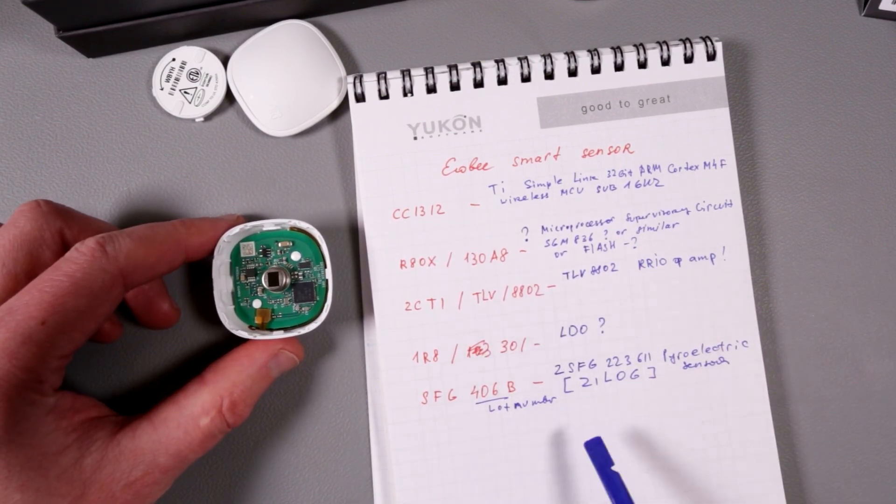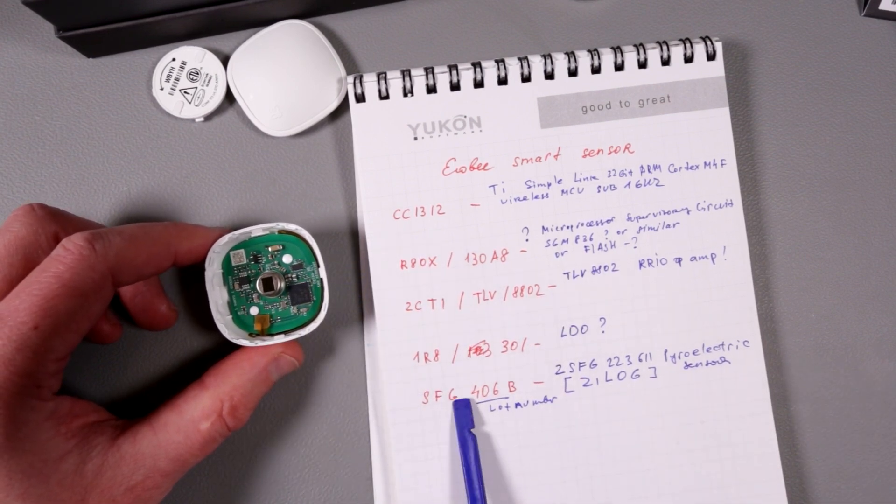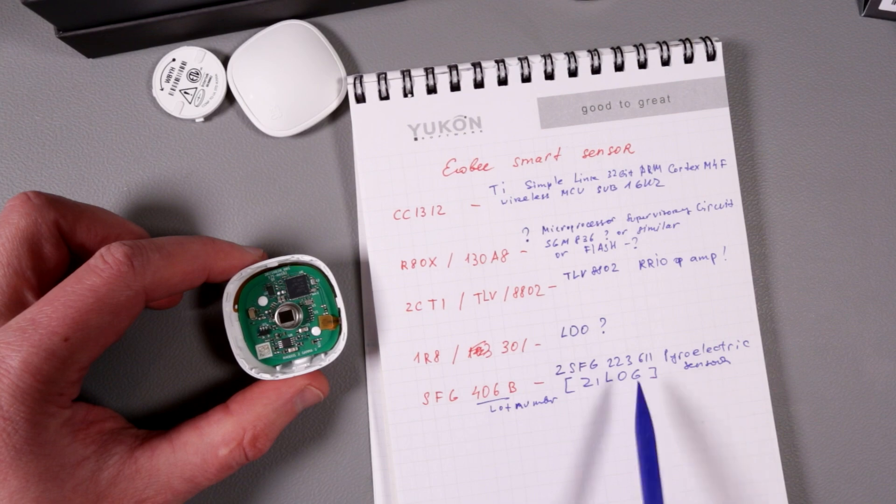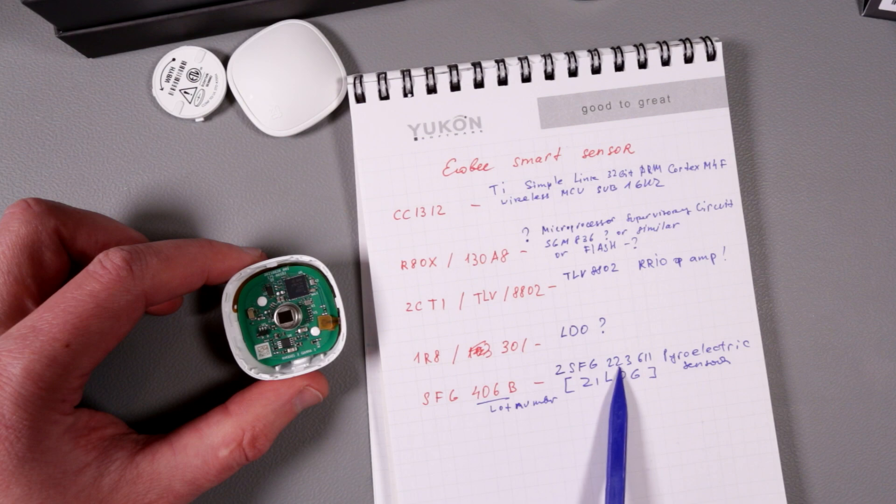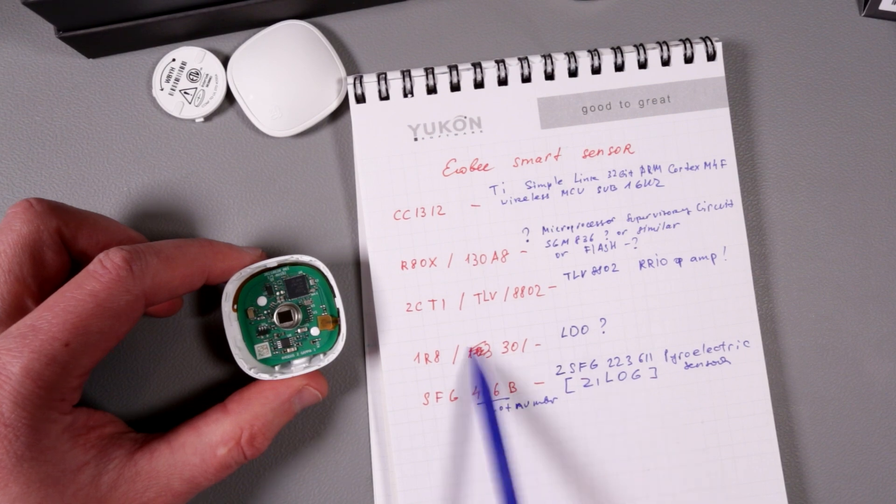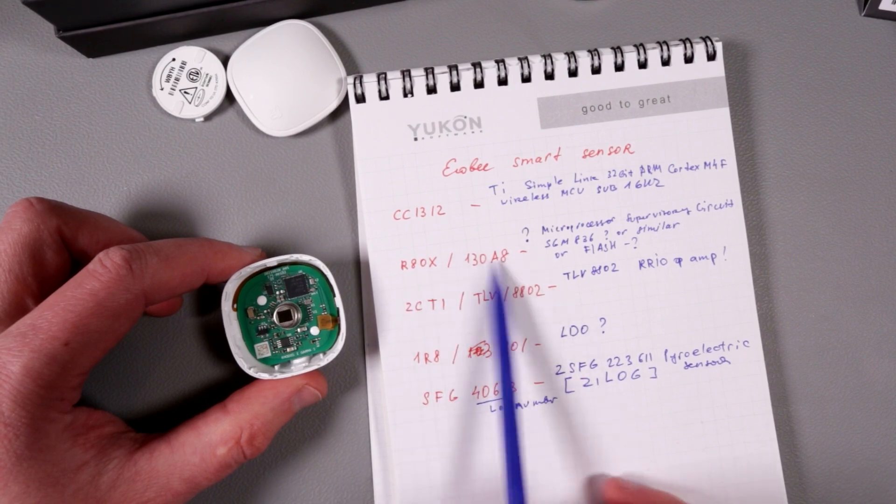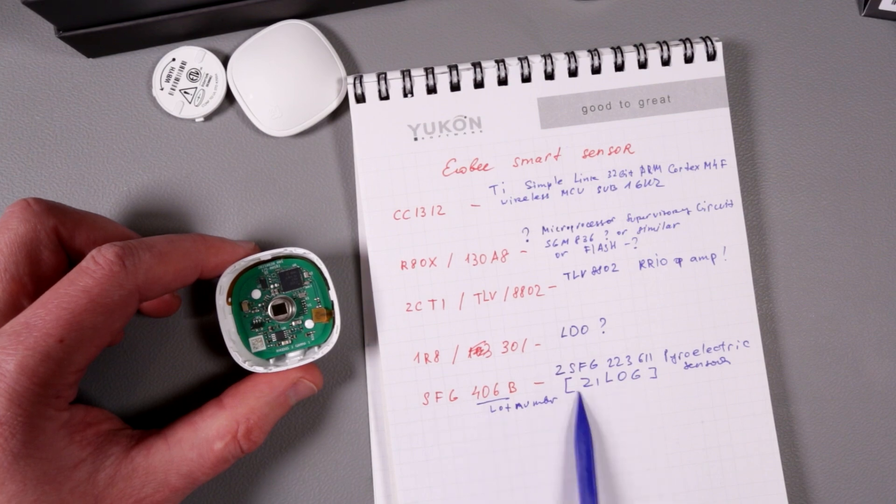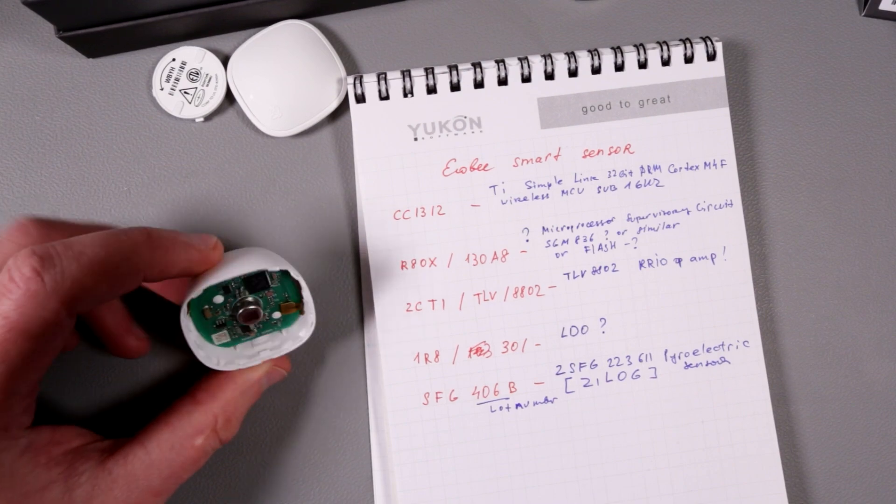The next one is the most interesting probably, or second most interesting, is SFG and then it says here SFG, and the bottom here says 406B. Turns out to be this is Zilog Mate SFG 223611 pyroelectric sensor. So this gentleman is Zilog Mate SFG 223611 pyroelectric sensor. Very, very nice. That's pretty much it.